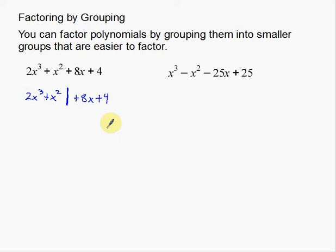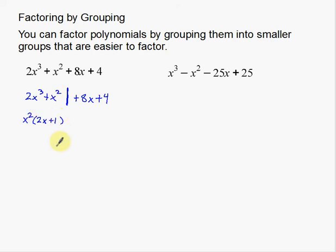When you factor, you want to look for something in common. In this case, I see an x squared that is in common. I'm going to take that out of both of these terms — I see two x's here and two x's here. When we factor something out, we are dividing it out. So we're taking 2x to the third and dividing out x squared to get 2x. We're taking x squared and dividing out x squared to get 1. A common mistake is that students assume you just take it out and wouldn't have anything left. No — we're technically dividing, so x squared divided by x squared leaves a 1.